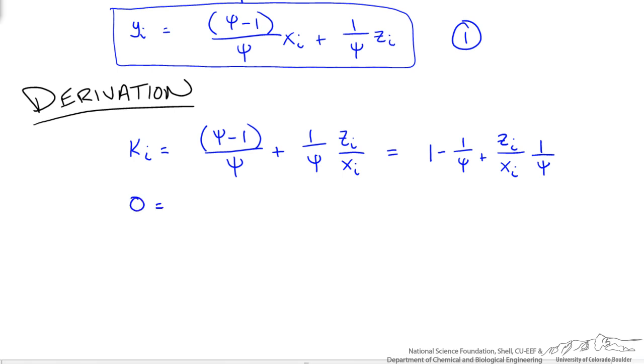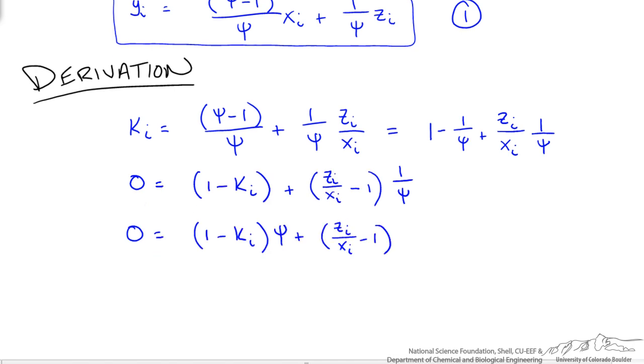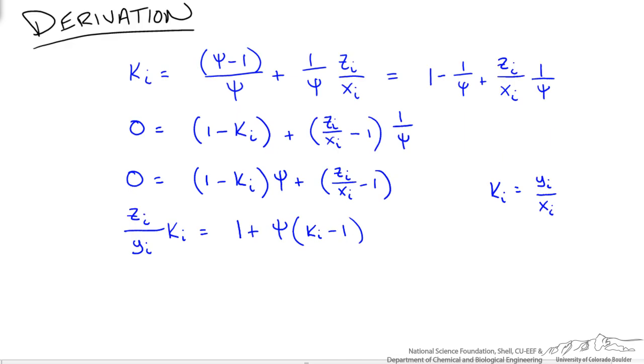So now we can group terms and set equal to 0. Multiply both sides by psi. We are going to bring our mole fractions to the left side and change this to yi by introducing ki. Because remember ki is yi over xi. So that is one way to get rid of our xi. And that is going to be equal to the rest of it.